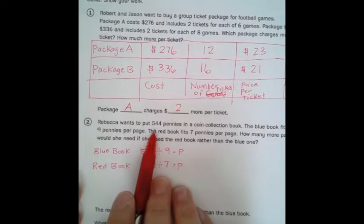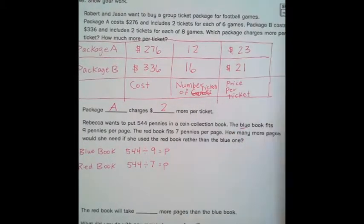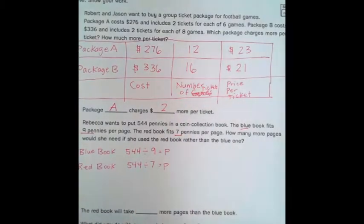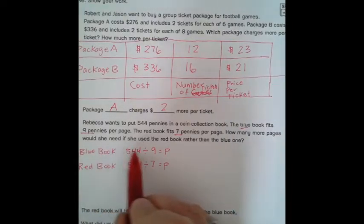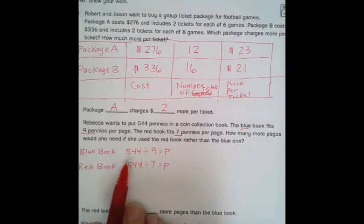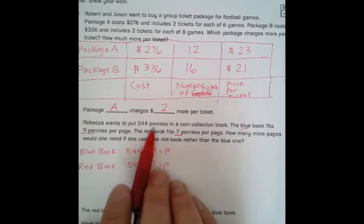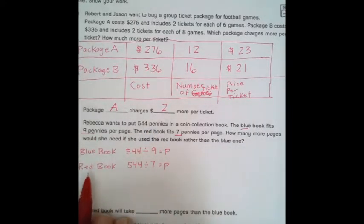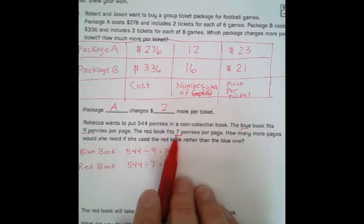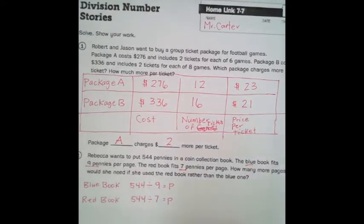All right. Let's look at number two. Rebecca wants to put 544 pennies in a coin collection book. This book, the blue book, fits 9 pennies per page, and the red book fits 7 pennies per page. How many more pages would she need if she used the red book rather than the blue one? Well, to figure that out, for the blue book, we're going to have to go 544 divided by 9 because we have 544 pennies, and we can fit 9 pennies per page. And the red book, we can have the same amount of pennies, 544, but the pages are a little smaller. You can only fit 7 pennies on that page.